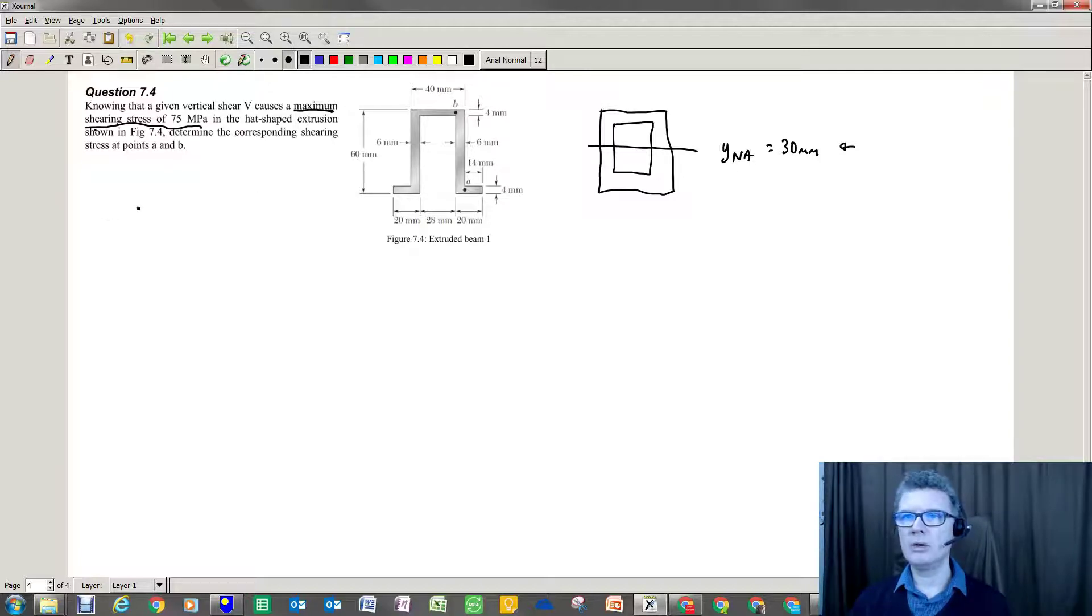So we know that we're going to get a maximum shearing stress. And since we have to find shearing stress at A and B, we will call this location C. So I'm going to get a shearing stress C, which will be my maximum value.